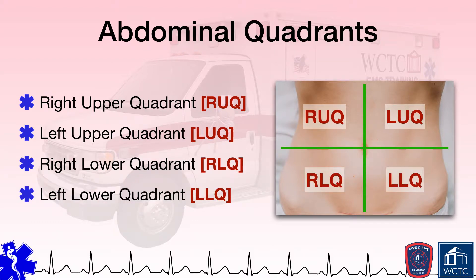We will explore the various organs within these different quadrants in subsequent modules related predominantly to the digestive, renal, and reproductive systems, although the abdomen also encompasses organs and structures related to virtually all body systems.